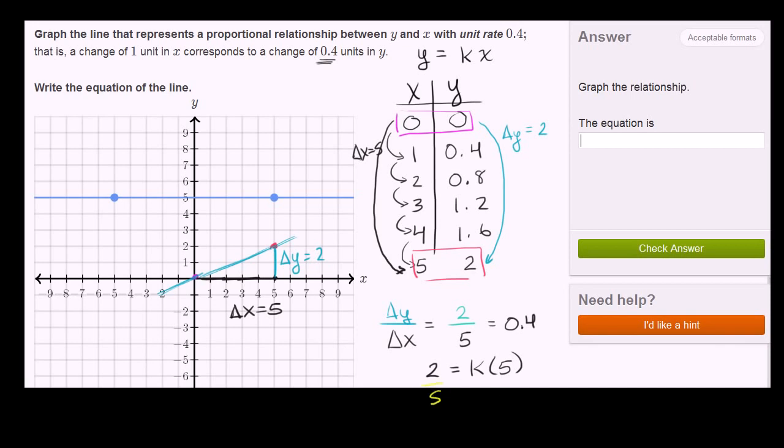I'm left with k is equal to 2 fifths. Which makes sense. We're used to seeing this. When we have y is equal to something times x, this something right over here is going to be our slope. So the equation of the line is y is equal to 0.4x.